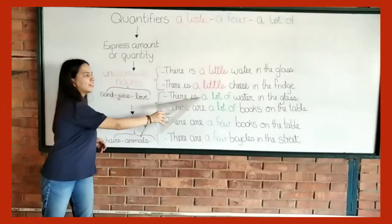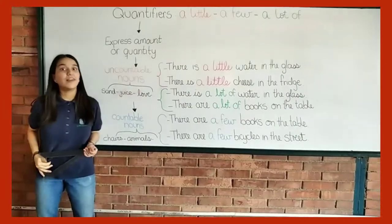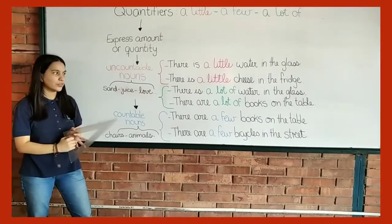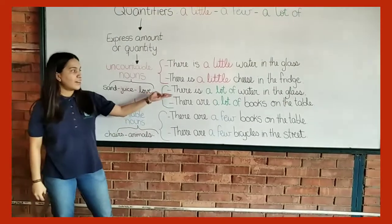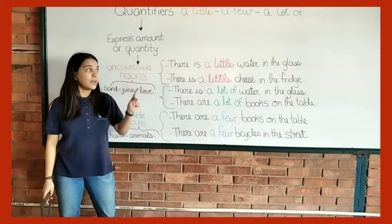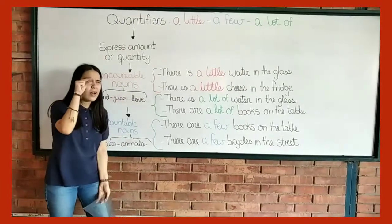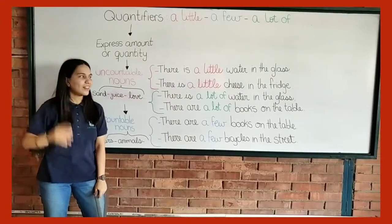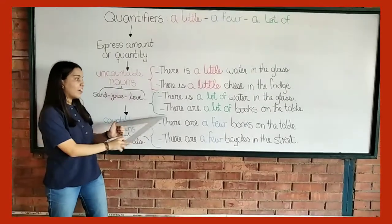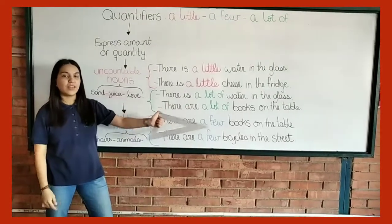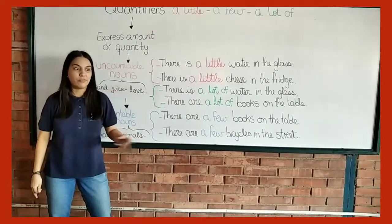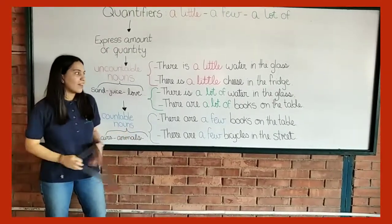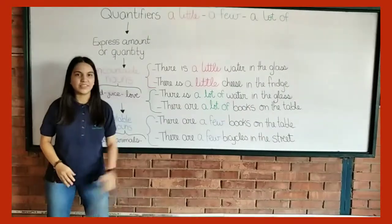Finally, we have this exception right here: a lot of. We use it with uncountable nouns and with countable nouns. For example, there is a lot of water in the glass — maybe you had a little water before, but now you have more. And there are a lot of books on the table — that means not three or five, but now ten, eleven, something like that.